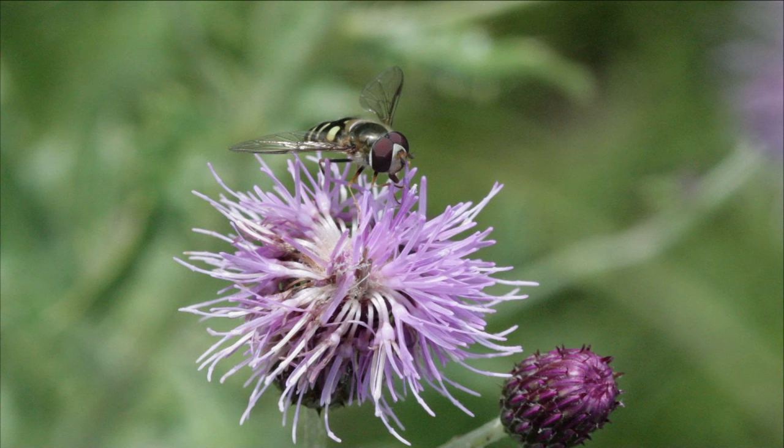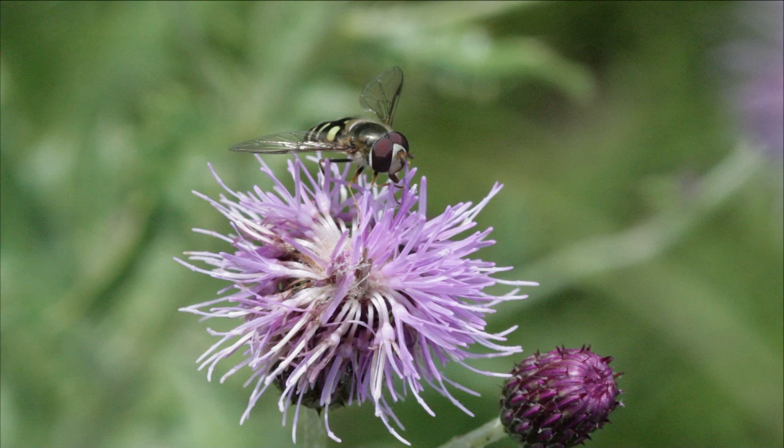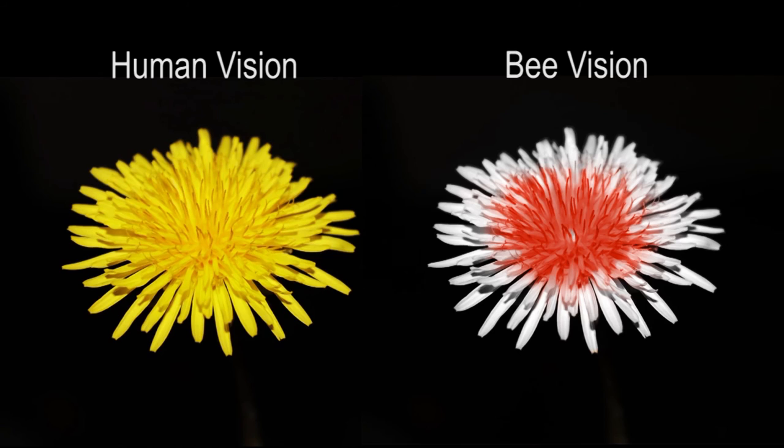Pollinators, like bees, can actually see ultraviolet light. So while a flower may look like this to us, a bee perceives ultraviolet color patterns which attract it to the flower. These are colors that we cannot perceive at all.